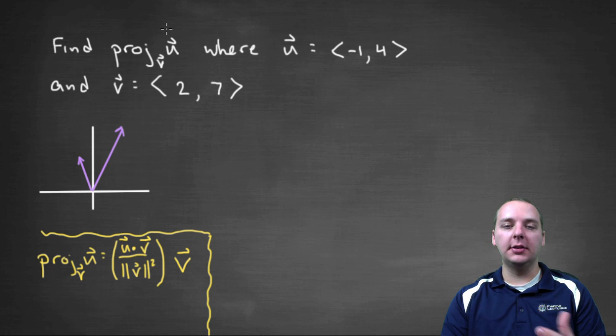Here we're being asked to find the projection of u onto vector v, where u is the vector <-1, 4> and v is the vector <2, 7>. So I went ahead and sketched them both out here. Here's vector u, and here's vector v up here.